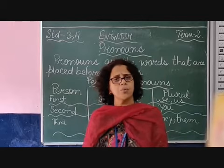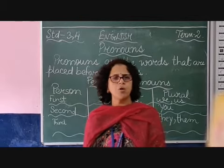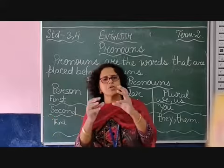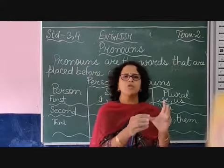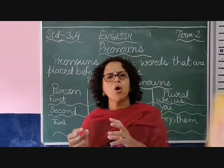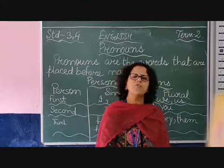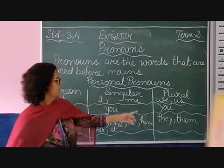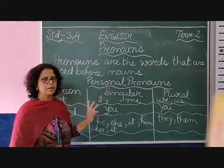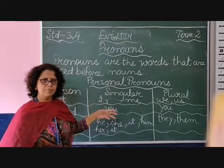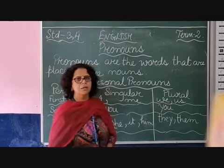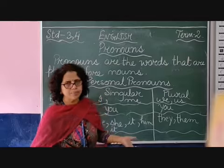So these are all subject pronouns. Now we have object pronouns. Like I said, everybody loves her. When we are talking about the object — she, he, it, I, you, we, they — these are all subject pronouns. When we are using object pronouns, we use — as I have written here — me and us. For singular, when we are talking about I, we use me. When we are talking about we, which means plural, we use us.